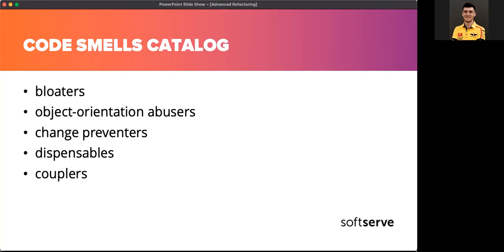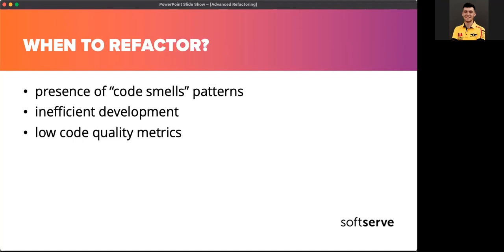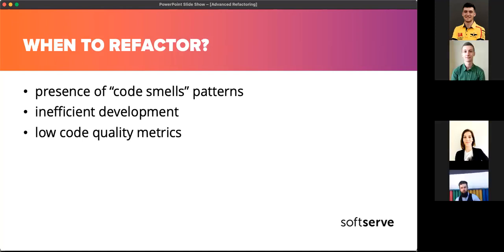Object-oriented abusers are incomplete or incorrect applications of object-oriented programming principles. Change preventers mean that if you need to change something in one place in your code, you have to make many changes in other places. A dispensable is something pointless and unneeded whose absence would make the code cleaner, more efficient, and easier to read and understand. Couplers contribute to excessive coupling between classes, or show what happens when coupling is replaced by excessive delegation. The moment when code needs refactoring is largely determined by the smells of the code — for example, when a method is too large or almost completely duplicates another method.